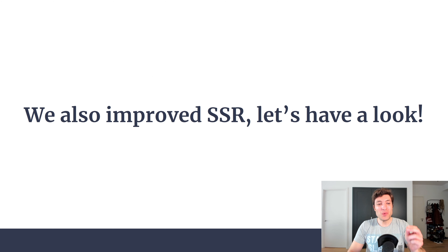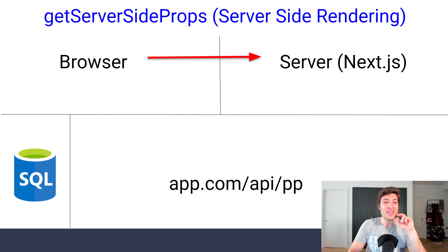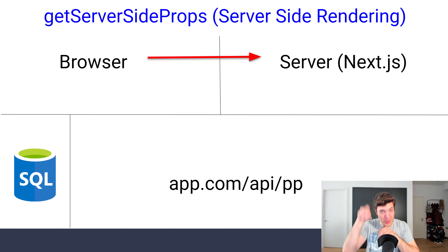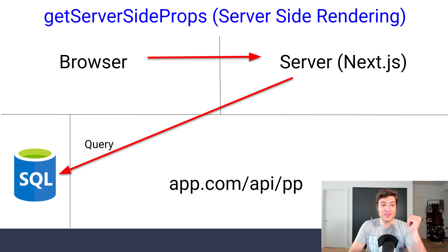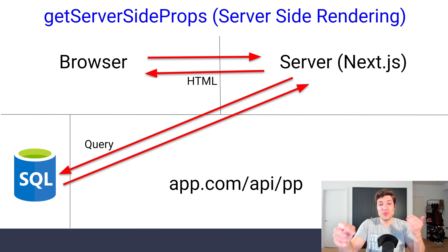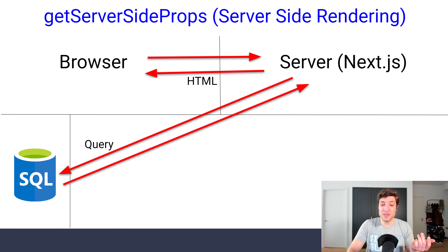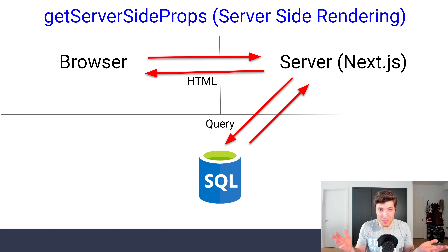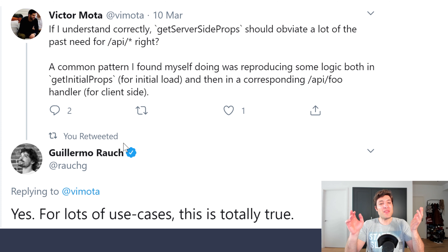This is an improvement. Like GetInitialProps, we only have two jumps — with the added advantage that we don't need that API anymore. Unless you have third-party applications consuming your Next.js API routes, you probably don't need to maintain that API anymore. And we also improved server-side rendering: instead of three jumps (browser → server → API → database), we now have two (browser → server → database directly).